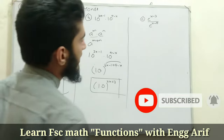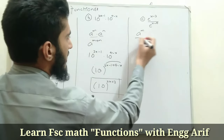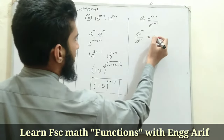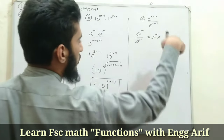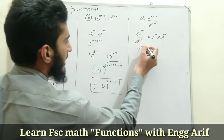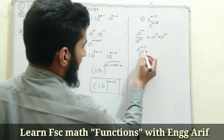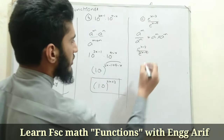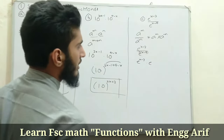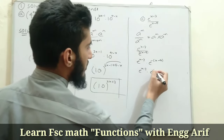For part c we have e^(x-3) divided by e^(x-4). Using the division law: a^m / a^n — when the denominator term moves to the numerator, its power becomes negative. So e^(x-4) in the denominator moves to the numerator as e^(-(x-4)). This gives us e^(x-3) · e^(-(x-4)).